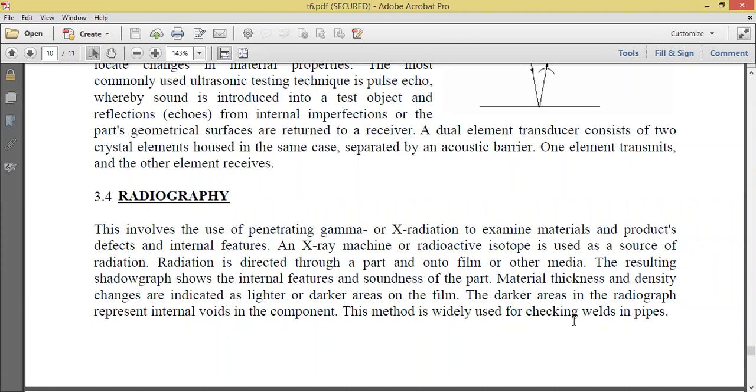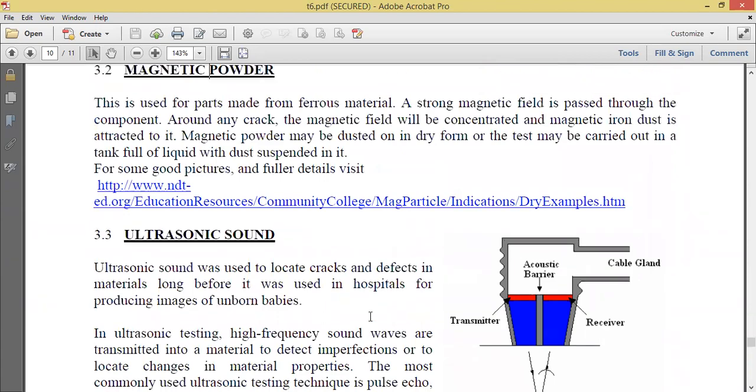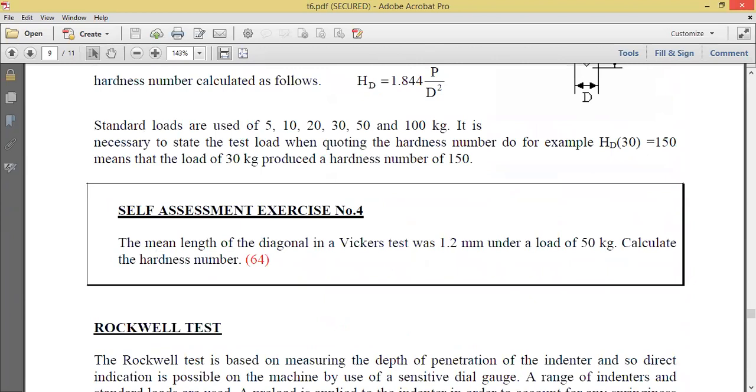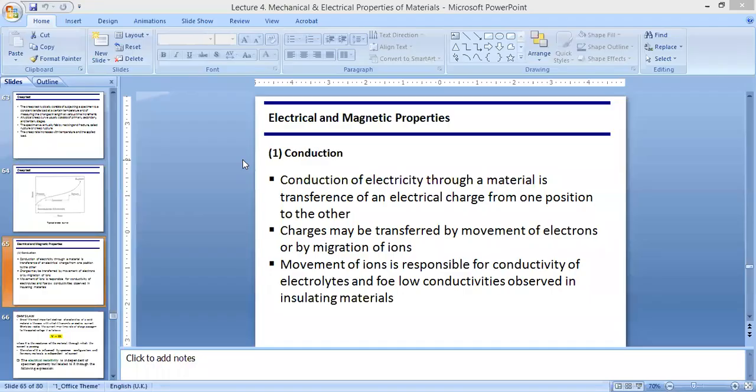This method is widely used for checking welds in pipes. So I think we'll end here for now. The rest are just self-assessment tests that you can go through on your own. So let's continue with electricity. I'm going to close this document and get back to our notes on the electrical and magnetic properties. We'll not look at magnetic properties - that's a whole huge topic that at this point is not very necessary.